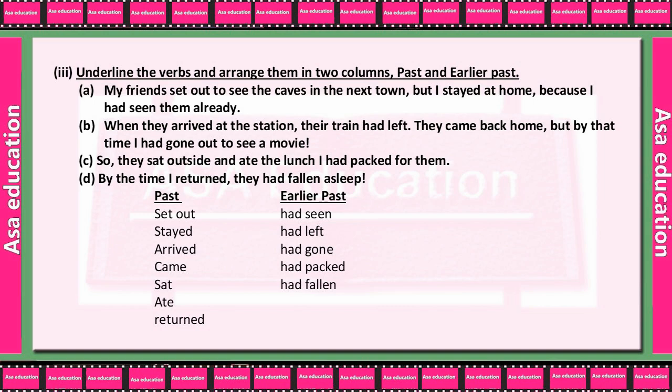You are given four sentences. Find out which words come in past tense and which come in earlier past. First sentence: My friend set out to see the caves in the next town, but I stayed at home because I had seen them already. Past tense: set out, stayed. Earlier past: had seen.